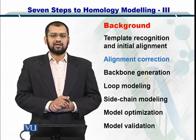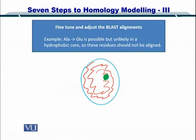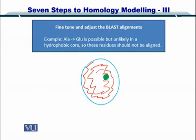In this module we will take a look at alignment correction. You have performed multiple sequence alignment between all the proteins and arrived at the proteins which are similar to the sequence of the protein whose structure you want to determine. If you already have an alignment from BLAST, you would want to fine-tune this alignment. Fine-tuning means that residues such as alanine, which are replaceable by glutamine, cannot be substituted if the alanine amino acid is in the hydrophobic core. Let's take a look at this cartoon.